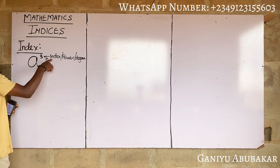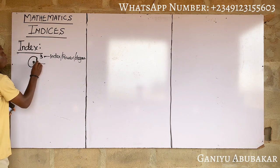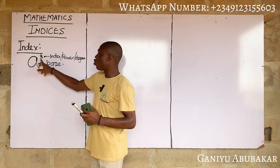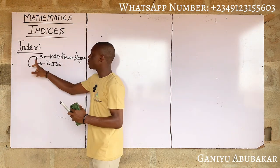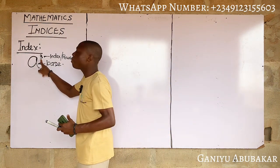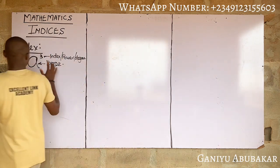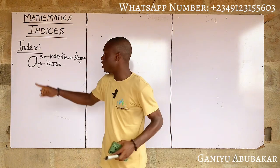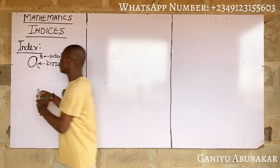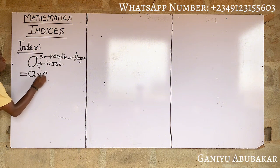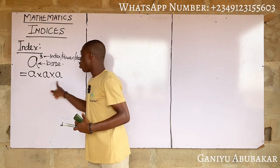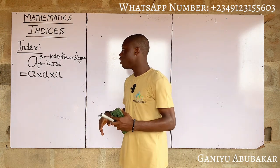Note that this three is called the power, index, or degree, while this 'a' is called the base. The idea behind index is that the index tells you the number of times the base will occur. So a to the power three means 'a' occurs three times: a × a × a. That's your idea behind index.